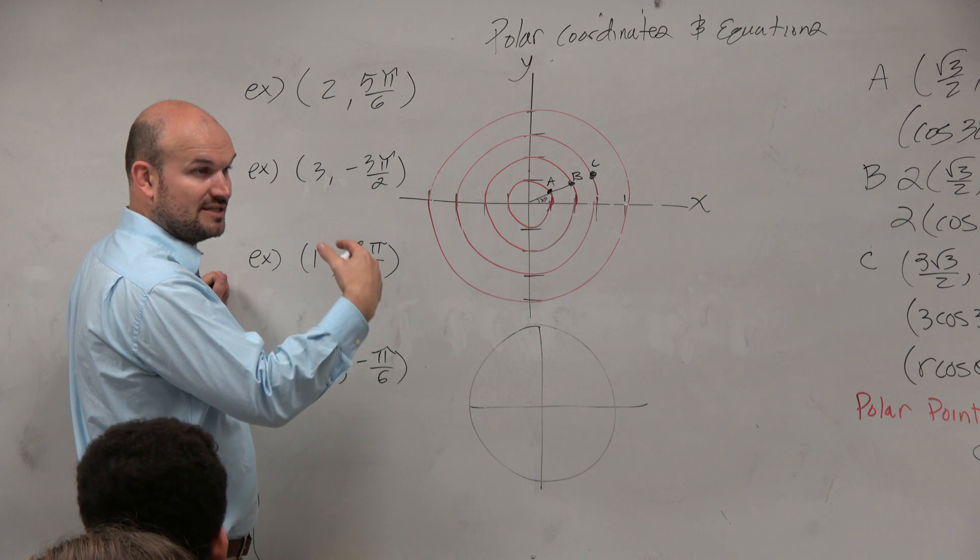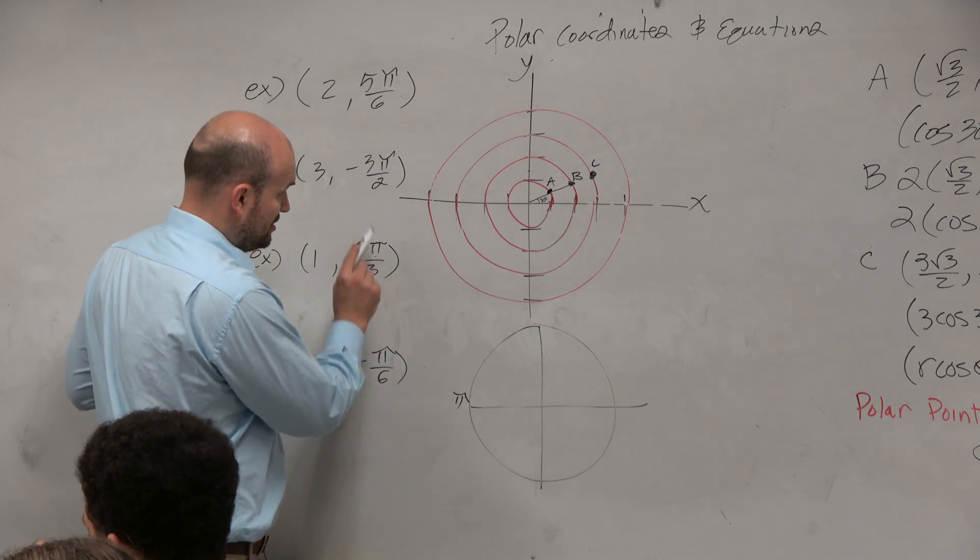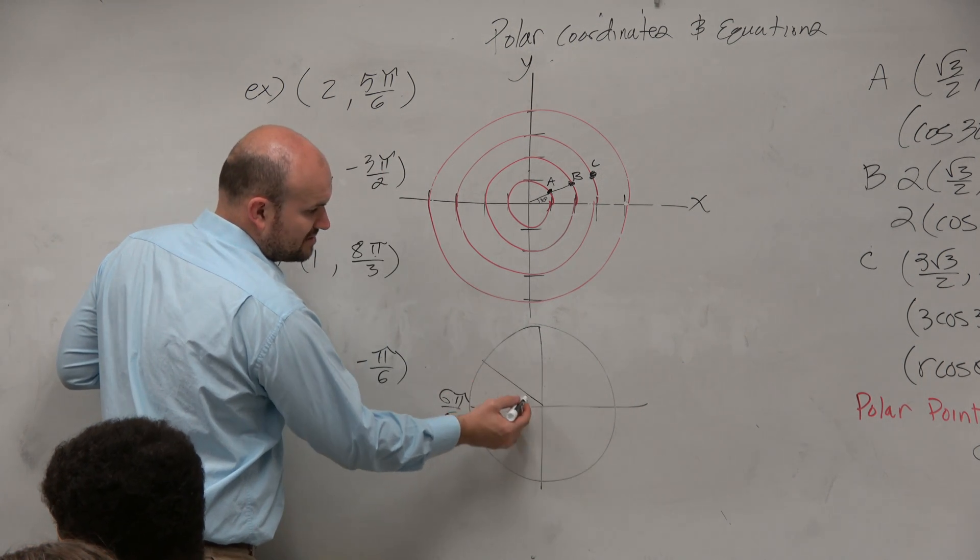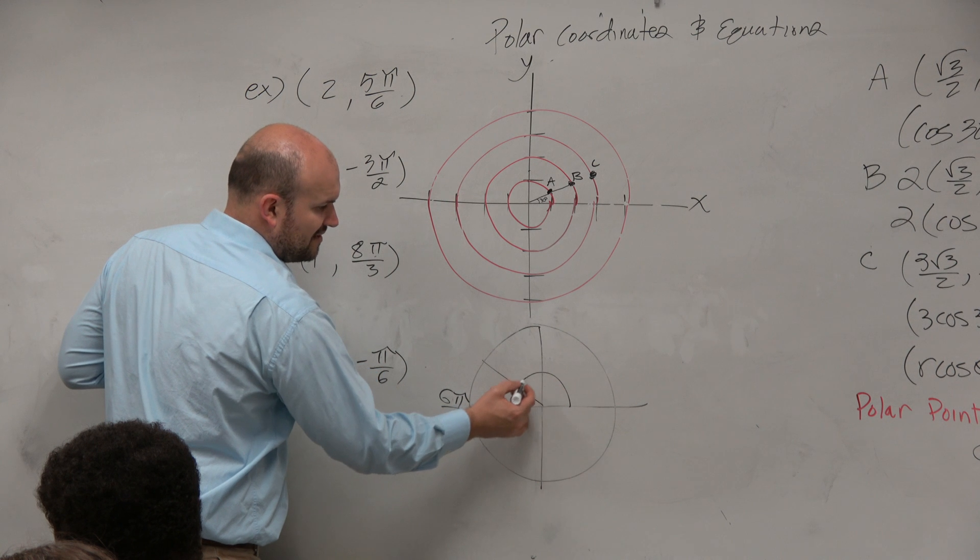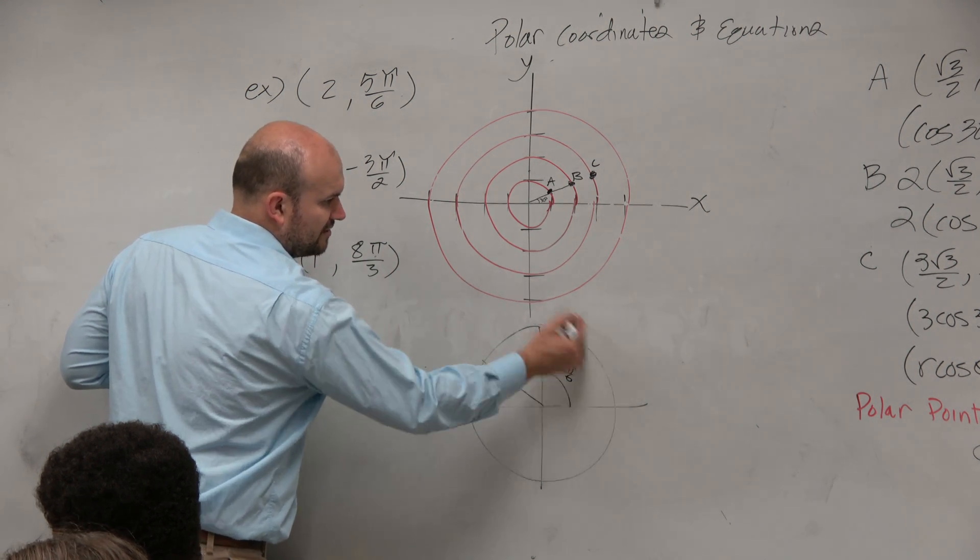I know that 5 pi over 6 is in the second quadrant because halfway around the circle is pi. In terms of 6, it's going to be 6 pi over 6. If I'm at 5 pi over 6, that means I'm short pi over 6, right? So 5 pi over 6 here, because we always start there and going in that direction is positive.